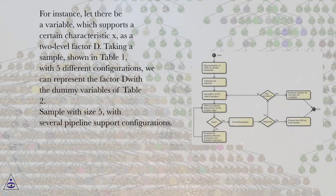For instance, let there be a variable which supports a certain characteristic X, as a two-level factor D. Taking a sample shown in table 1, with five different configurations, we can represent the factors with the dummy variables of table 2.